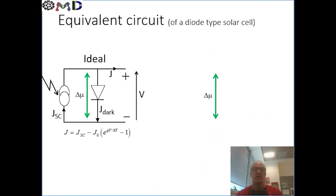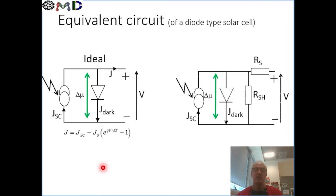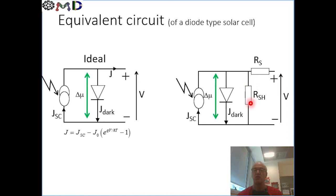So that was the equivalent circuit of an ideal diode, but life is seldom ideal. Basically, every solar cell has some form of serial resistance or parallel resistance in the equivalent circuit. The physical meaning of these two may vary. The most common one would be the parallel resistance, which makes us lose current because part of the current flowing out would drain through it.